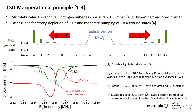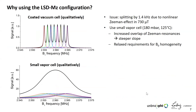These transmission dips are symmetrically shifted on the frequency axis due to the nonlinear Zeeman effect and also the light shift of the laser. Subtracting the two signals gives a dispersive-like curve with a zero-crossing exactly at the Larmor frequency. We use this LFDMZ configuration because operating in strong magnetic fields requires handling the nonlinear Zeeman effect, which causes a splitting of about 1.4 kilohertz of the Zeeman levels. For a coated vacuum cell this splitting leads to poor overall magnetometer performance.